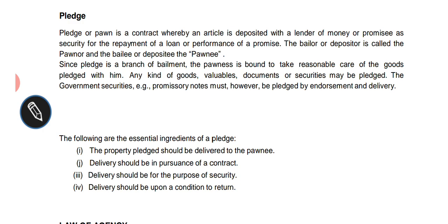The pawnor's right is the right to redeem, given under Section 177. The pawnor can exercise this right to redeem before the pawnee has made an actual sale of the goods. Once an actual sale has taken place, the pawnor cannot exercise the right to redeem. This concludes the topic of pledge. In the next session, we will discuss the topic of agency, which is the last topic of the Indian Contract Act. Thank you.